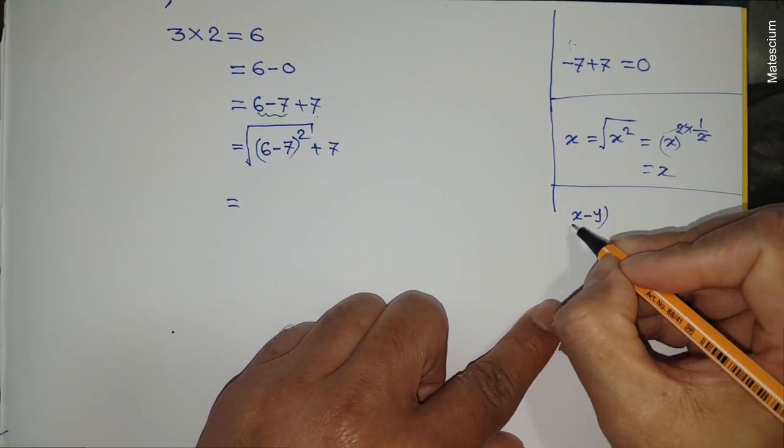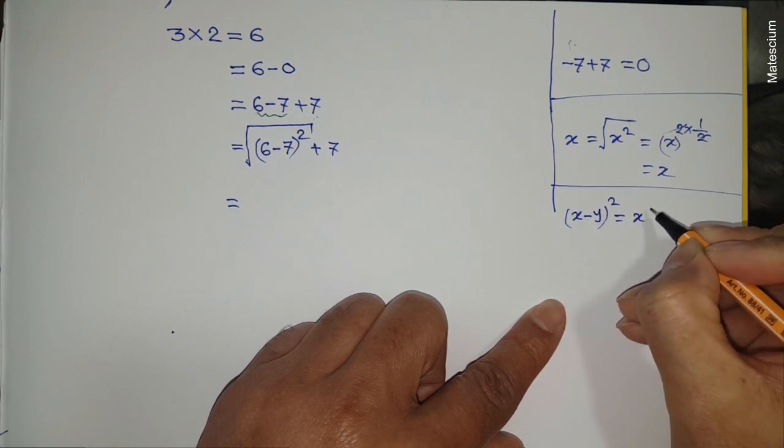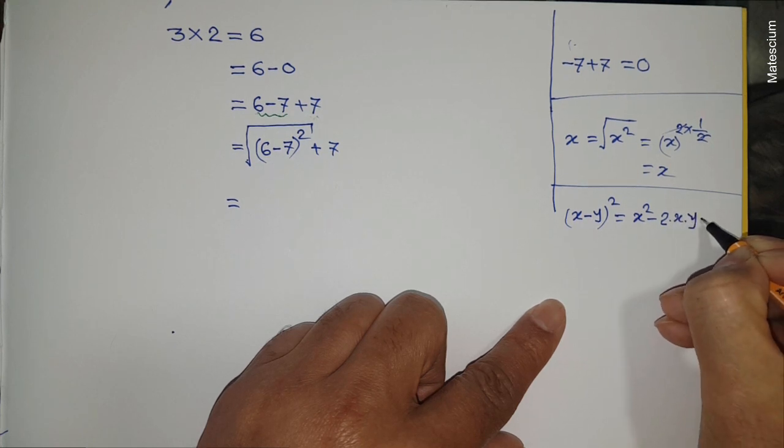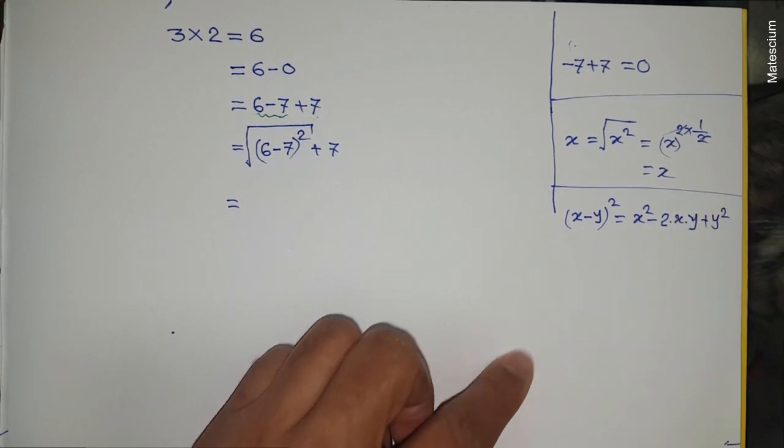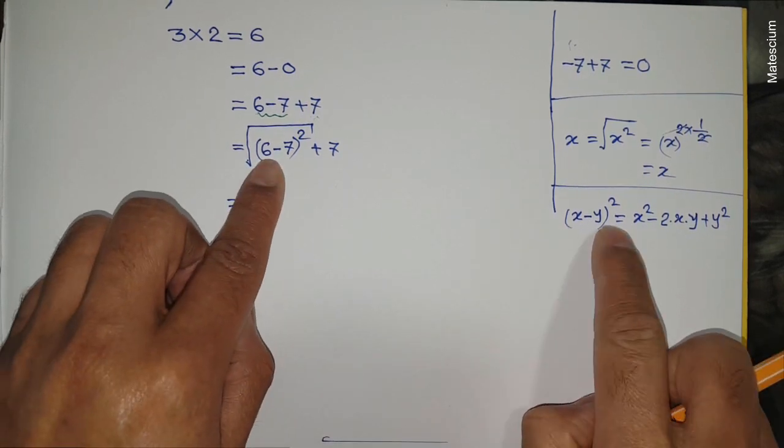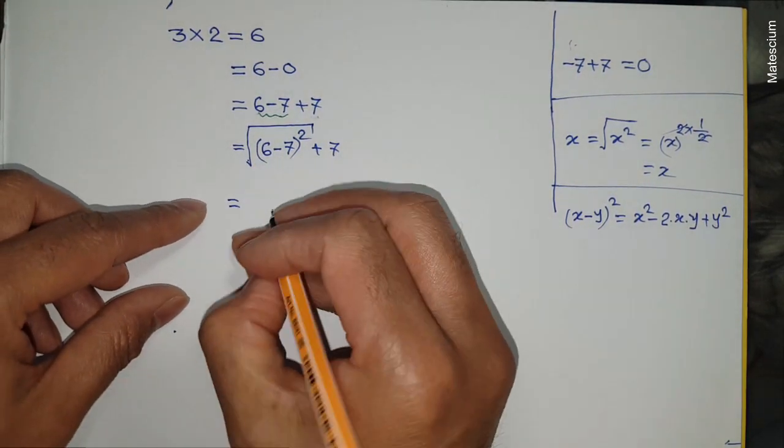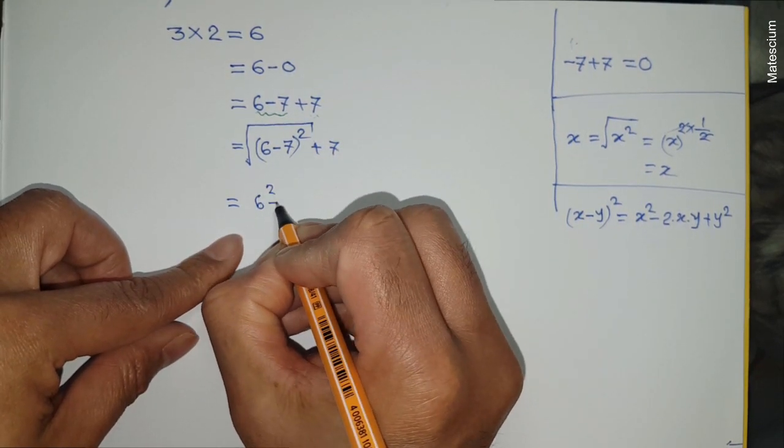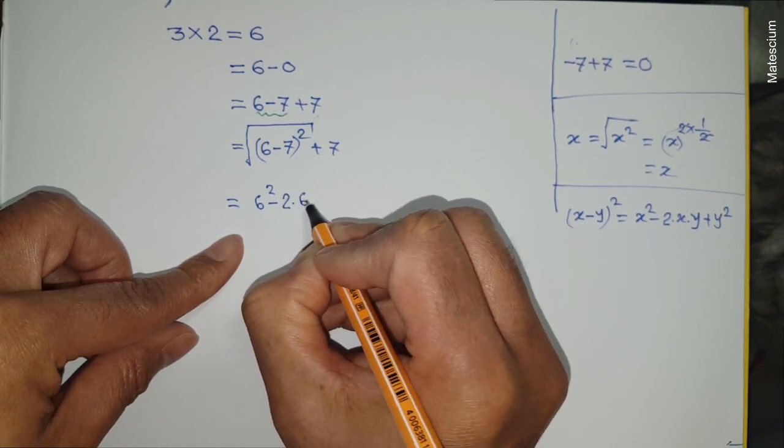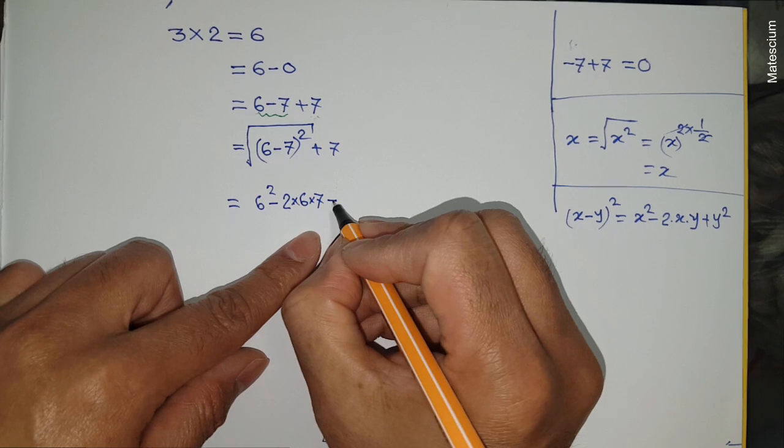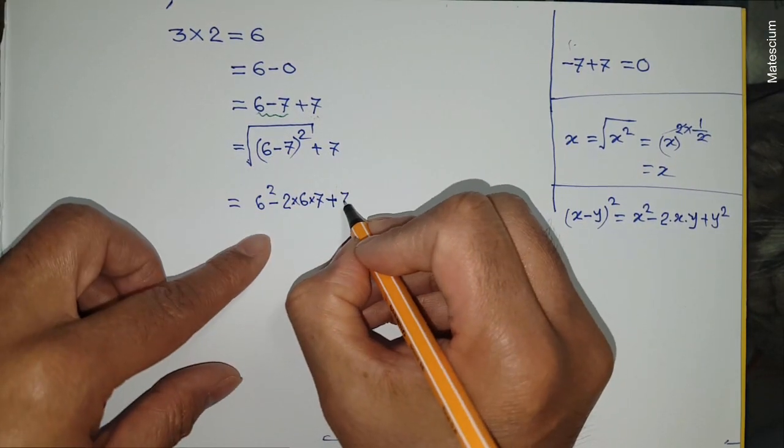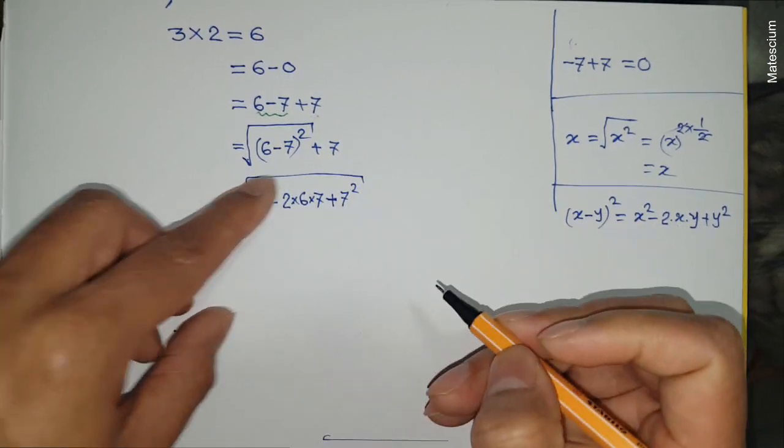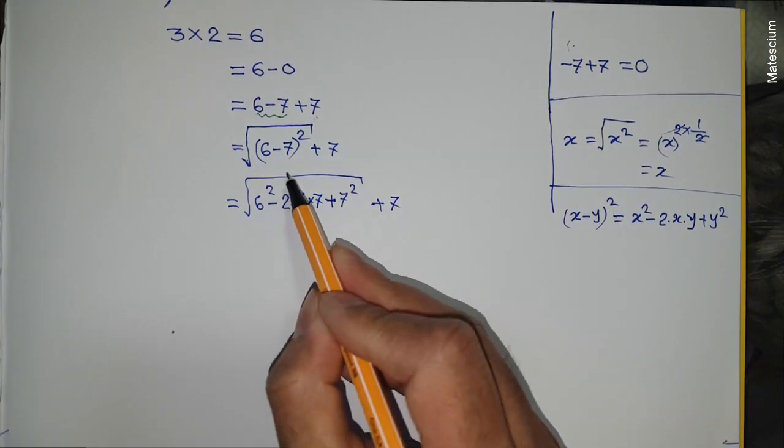This statement uses a simple mathematical rule: x minus y whole square equals x² minus 2xy plus y². So I can apply this formula exactly here. Six is x and seven is y, so six minus seven whole square becomes 6² minus 2×6×7 plus 7², and this is under square root with plus seven remaining. If we calculate this part, it becomes equal to six, so I did not break any mathematical rules until now.